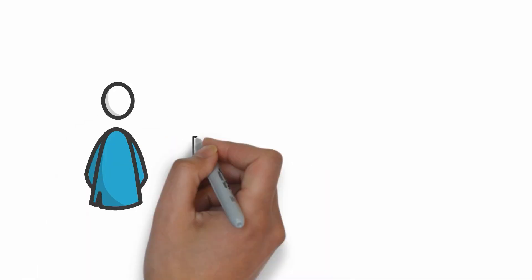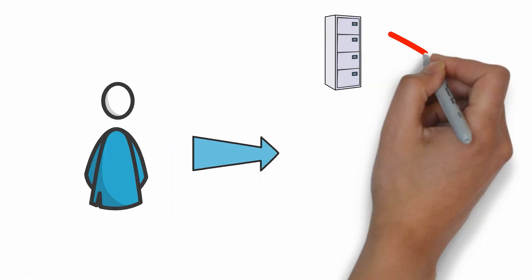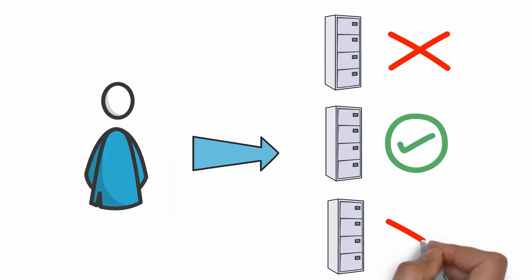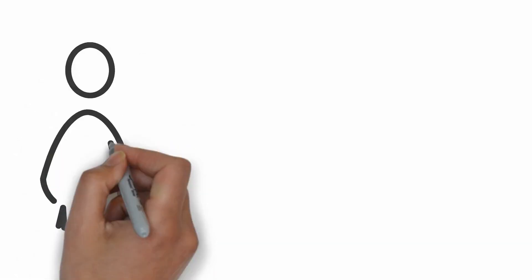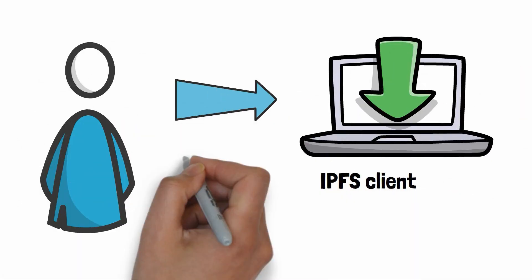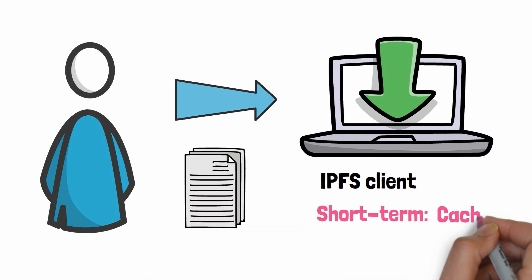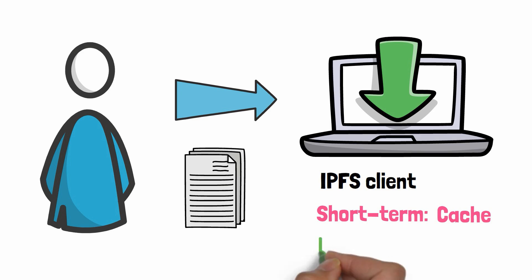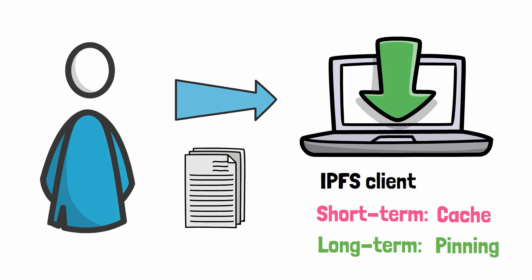The data needs to be stored somewhere and it costs money. The solution is simple: in the IPFS network, everybody decides which files they want to store. To upload a file to IPFS, you need to run an IPFS client on your computer. When you first upload it, it will be put in the cache, but it's only temporary. If it's not requested in the next few days, it will be deleted. But if you want to keep files forever, you need to explicitly instruct IPFS to keep them. That's what we call the pinning feature.